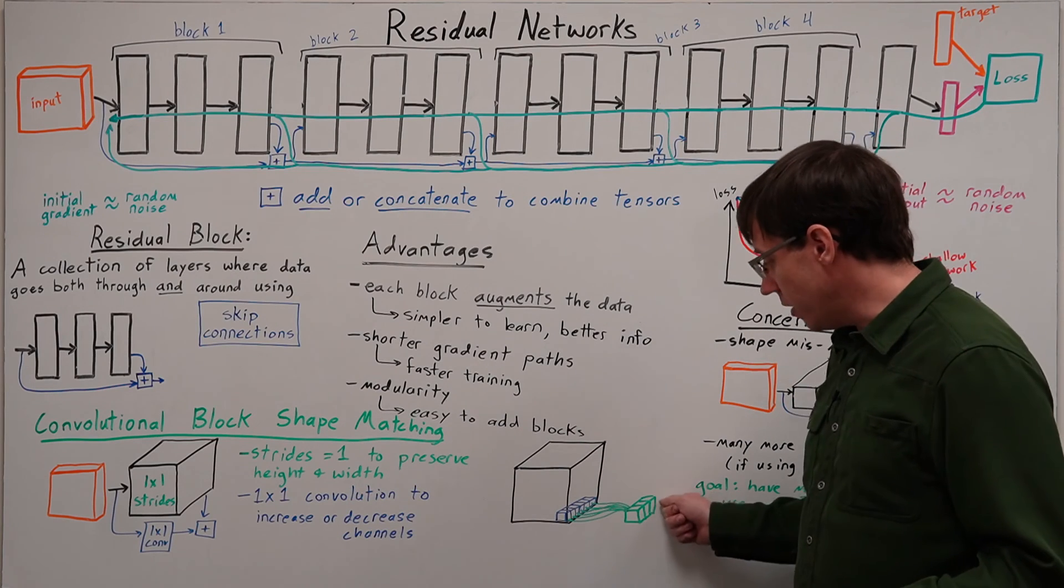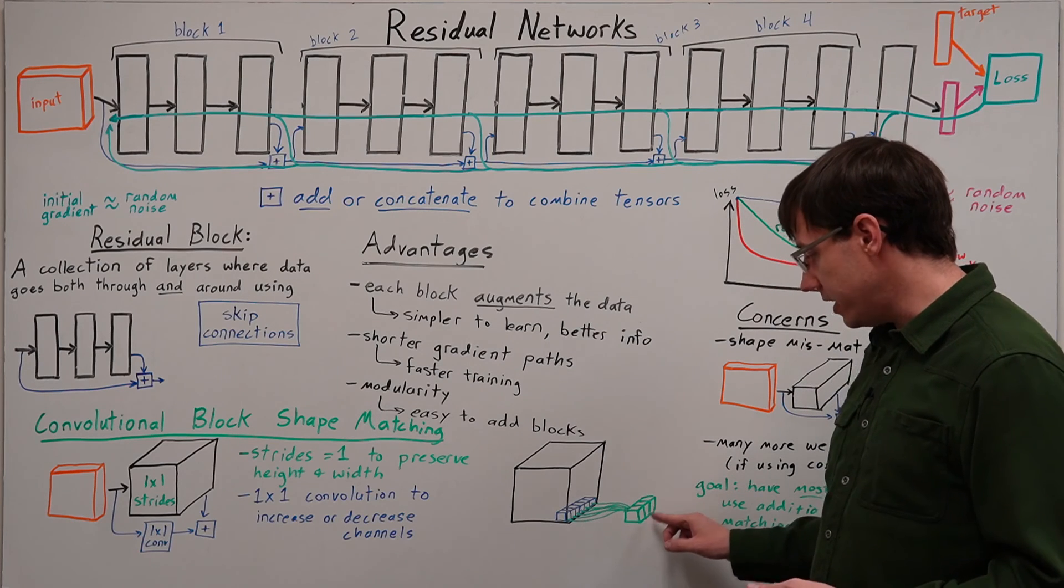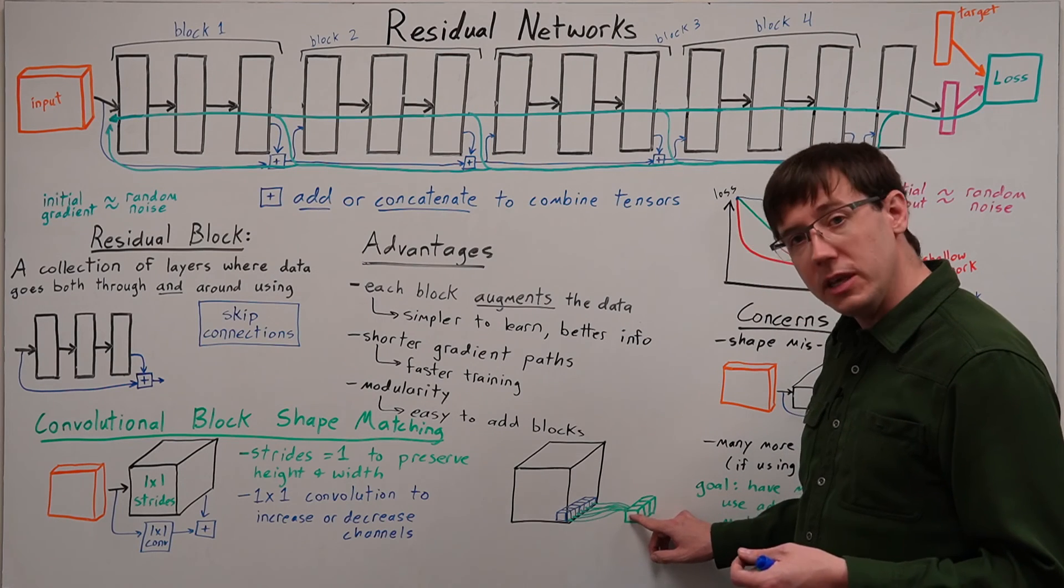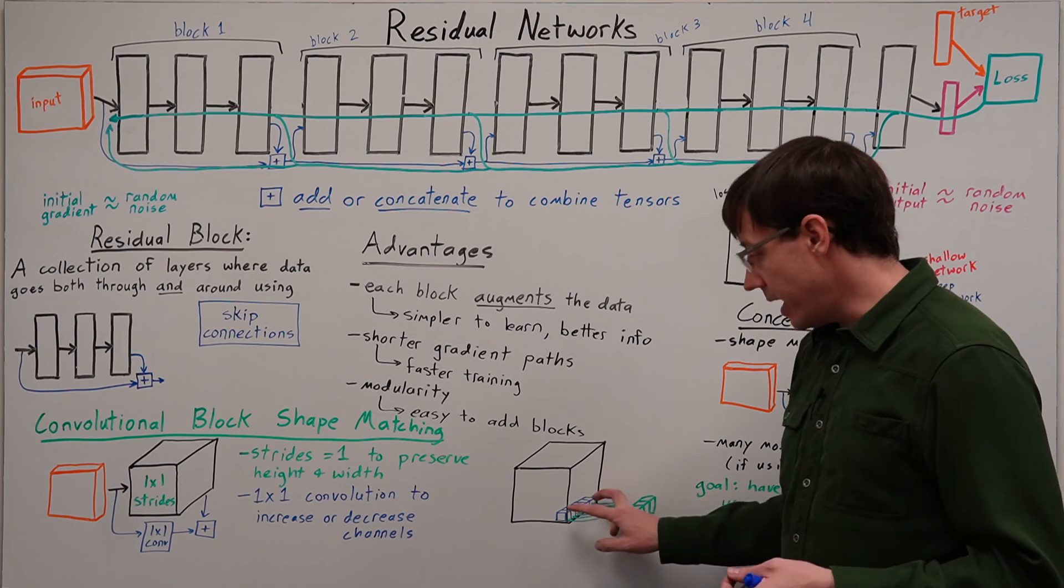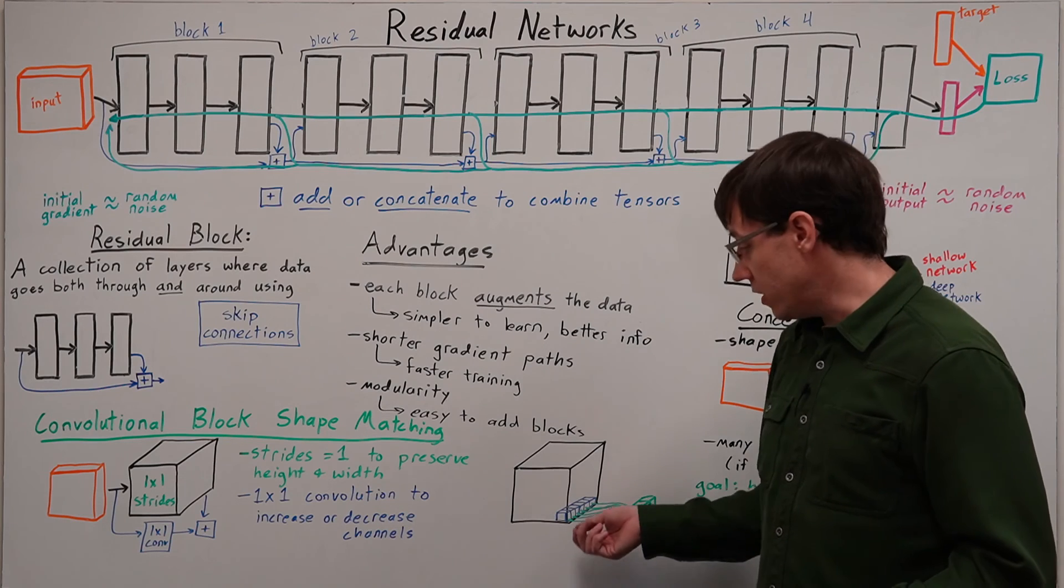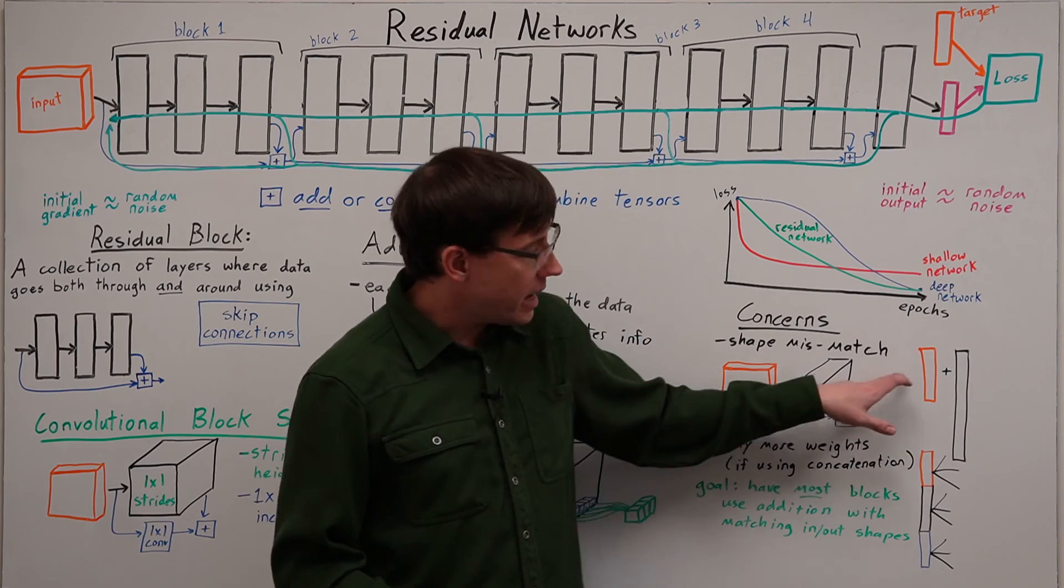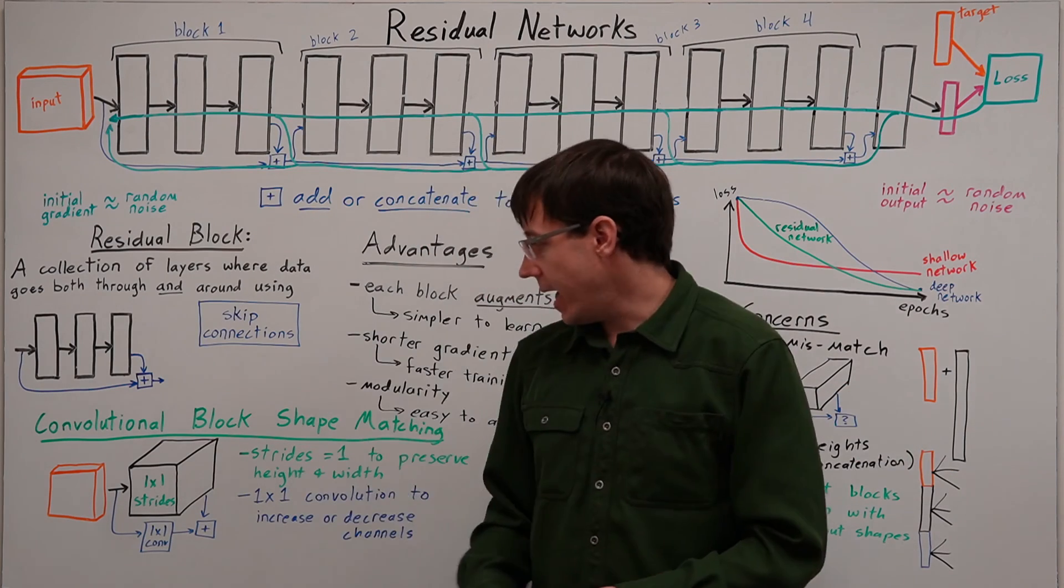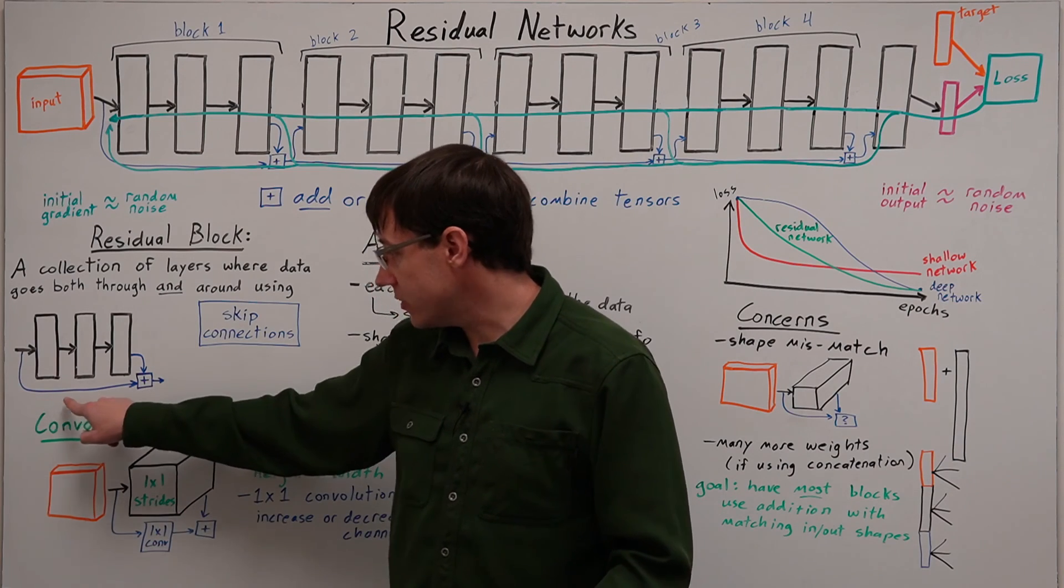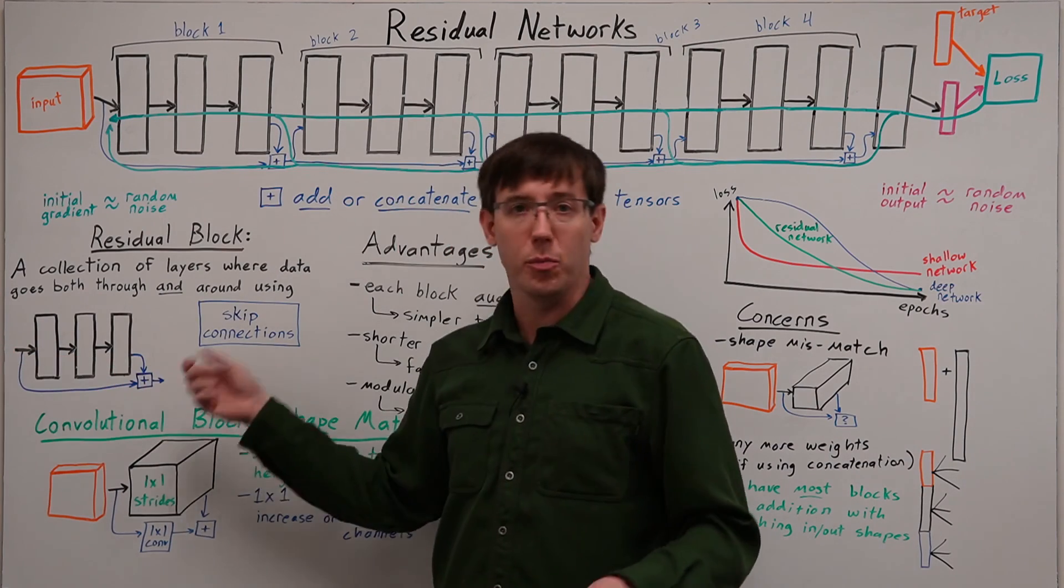But by setting the number of filters or channels for our 1x1 convolution, we can specify the depth of our output layer, and each of these neurons will get its input from every neuron across the depth of the previous layer, and so we can use this to either increase or decrease the depth. And so if we think by analogy to dense layers, adding this 1x1 convolution step is as though we inserted a single dense layer along this path to make the input and output shapes match up.